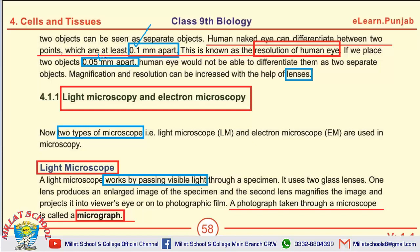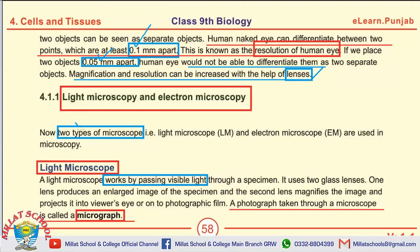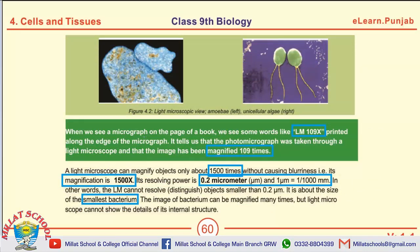If we place two objects 0.5 millimeter apart, would the human eye be able to differentiate? No, the human eye would not be able to differentiate these points. The next MCQ: magnification and resolution can be increased with the help of lenses. The next one is types of microscope — there are two types: light microscope and electron microscope. Light microscope works by passing visible light through the specimen.